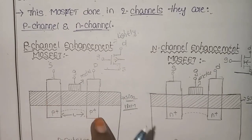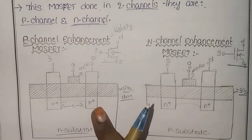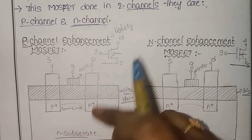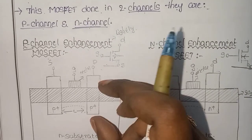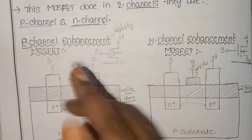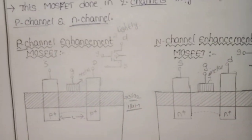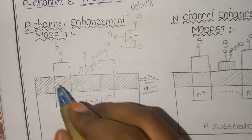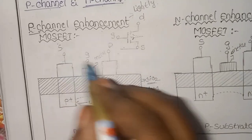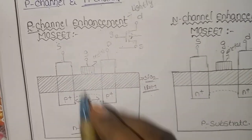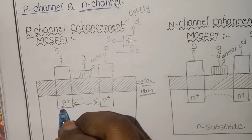In this MOSFET, two P-type materials from the N-substrate will be applied positive. The source and drain are on the P-type regions.